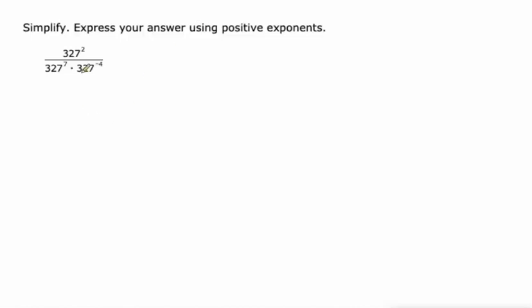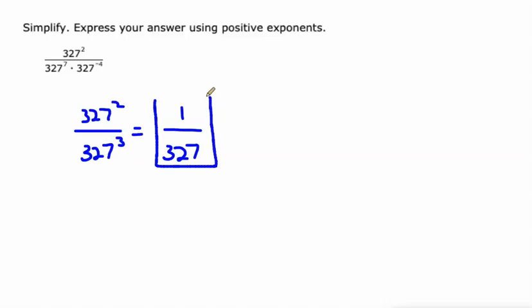Now let's get into the nitty-gritty. All base 327. I'm gonna leave the top alone for right now: 327 to the second power. On the bottom, I'm gonna rewrite that numerator as 327 to the third power, because 7 plus negative 4 is negative 3. Then I'll use that rule I just talked about. Since I've got more 327 on the bottom than I do on the top, I'll do 3 minus 2 is 1.